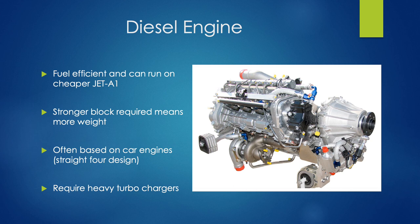We also have diesel engines, and these are very modern engines. However, they run off diesel, or more commonly Jet A1 fuel. The advantage of this is it's a lot cheaper to run and it's a lot stronger as well. They're often based off car engines which are then adapted for aviation. However, the disadvantage is they require heavy turbochargers to give them extra power, so they're generally a heavier engine, but they are more reliable and cheaper to run an aircraft on.